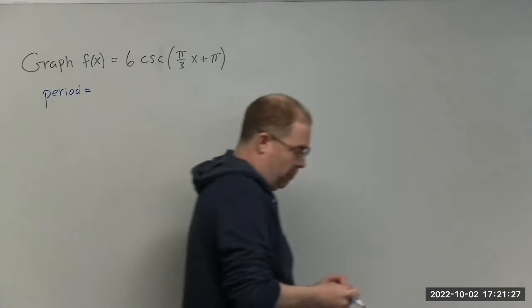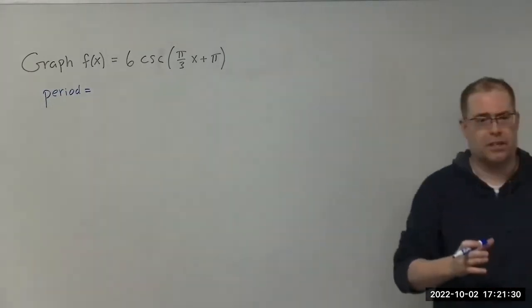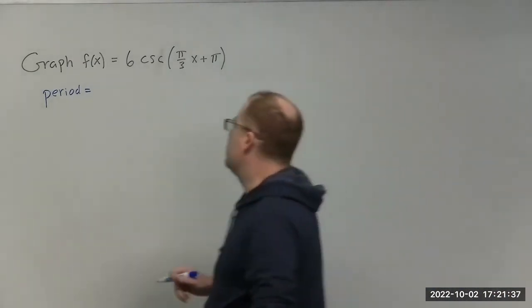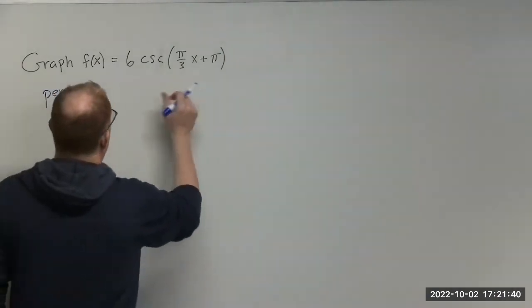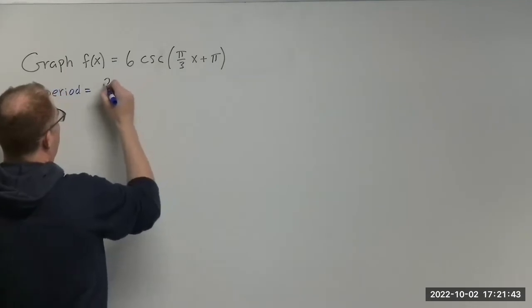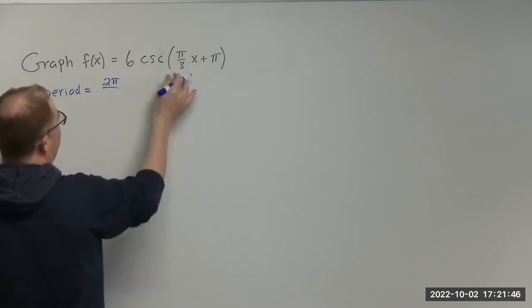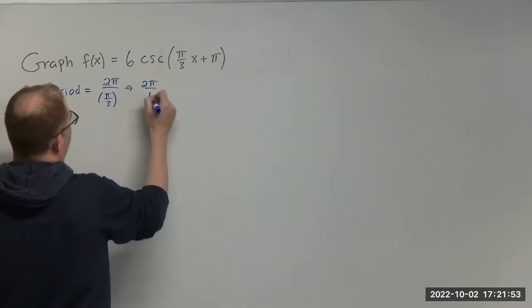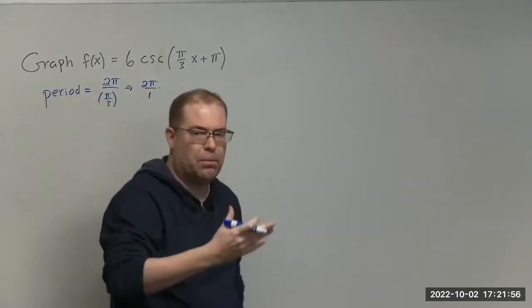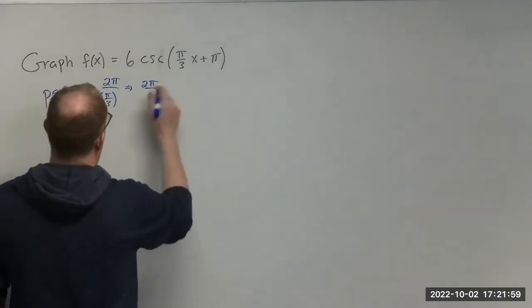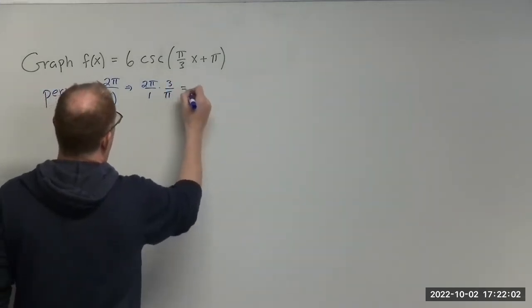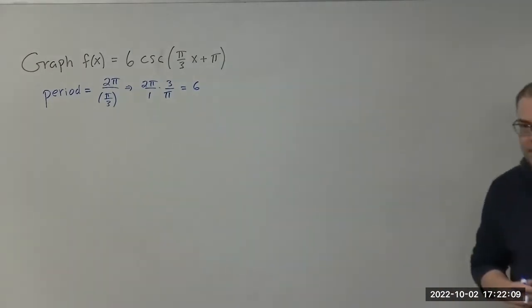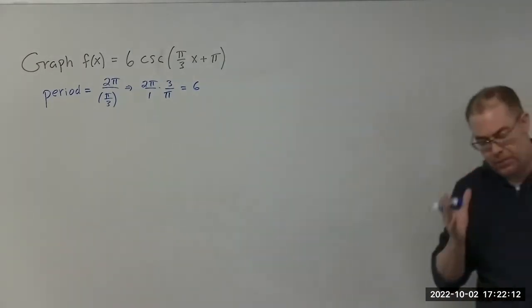Remember, the period for sine and cosine is 2 pi — that's one cycle, one revolution. So the period is going to be 2 pi divided by whatever is in front of x. Simplifying this, that's 2 pi times 3 over pi. The pi's cancel out, and this gives us a period of 6.